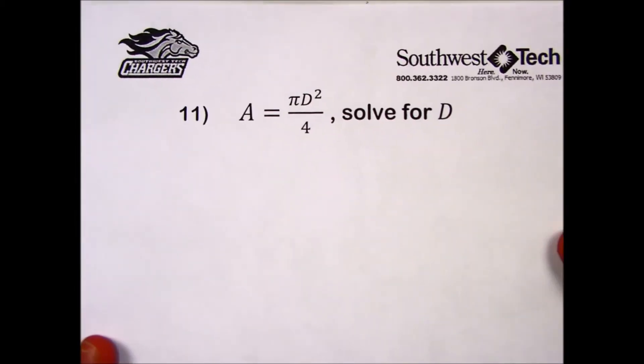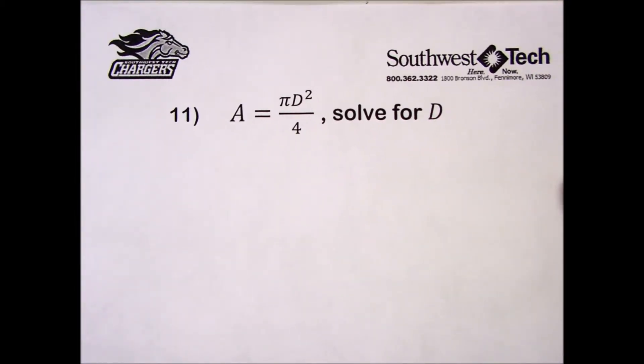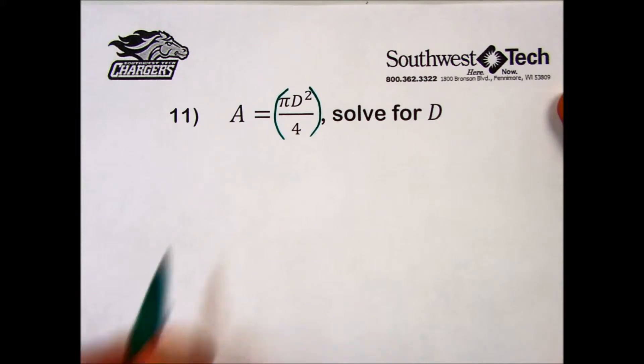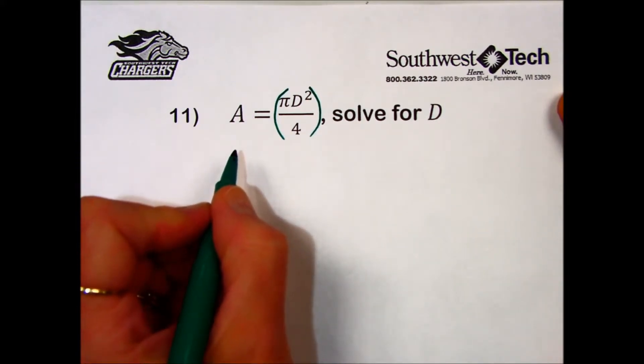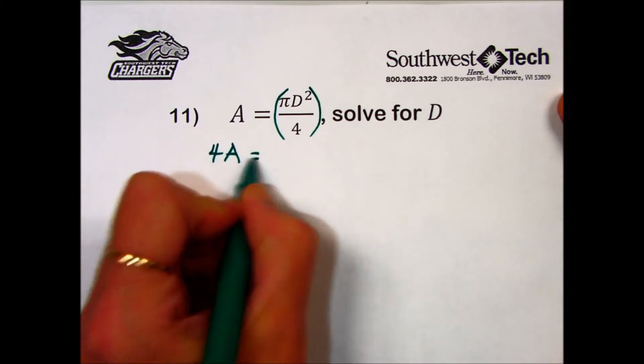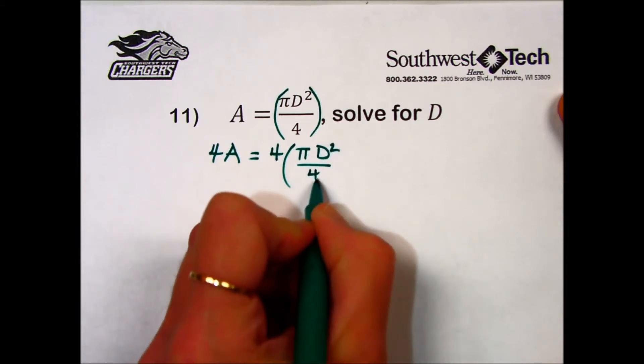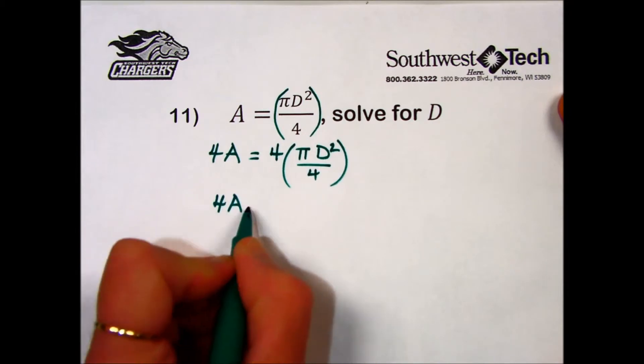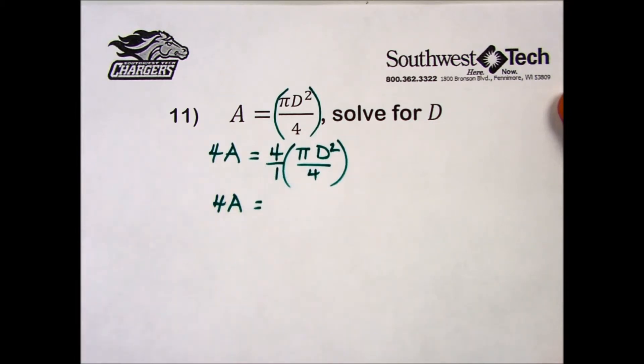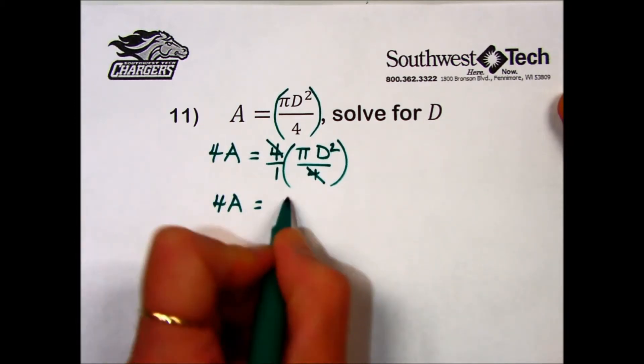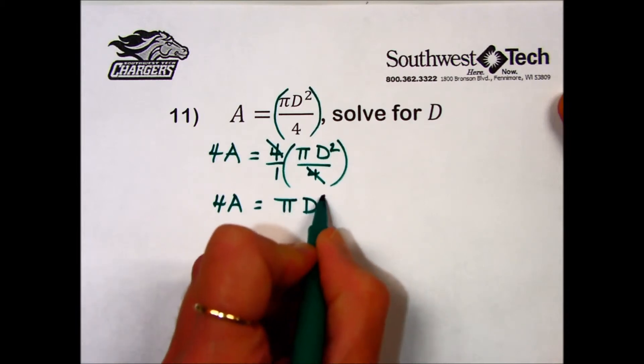Problem number 11 in practice set 40 asks us to solve for D. This also has a fraction in it, and that's the first thing I'm going to do to get rid of that fraction is to counter the division or the fraction of one-fourth by multiplying both sides by 4. So I'm going to take 4 times the left-hand side and 4 times the right-hand side. 4A is the result of 4 times A. The 4 that's multiplied by the expression on the right-hand side cancels out the 4 that's in the denominator and leaves us with pi times D squared.